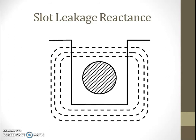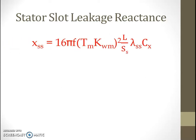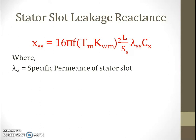In the figure we have shown one slot and some of the fluxes that are known as leakage flux — that is slot leakage flux. So slot leakage reactance for stator can be calculated with this equation: X_ss (suffix ss for slot and stator) equals 16π·f·T_m·K_wm² multiplied by L divided by S_s, multiplied by λ_ss and multiplied by C_x, where λ_ss is the specific permeance of the stator slot.